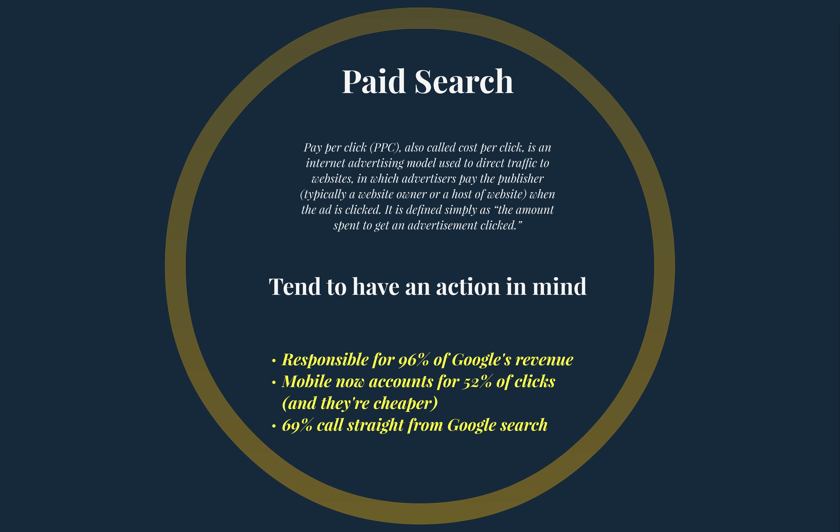People who click on paid search advertisements tend to have an action in mind — either a purchase or some type of conversion. The reason consumers tend to click on paid search ads is because they know it's taking them exactly where they want to go. They don't have an information search in mind — they know exactly where they want to go and that advertisement is speaking to it. So you've got to make your pay per click marketing advertisements very specific to what the consumer wants. We're going to be practicing that through Mimic Pro later this semester — it really does a good job of mimicking a Google AdWords campaign.